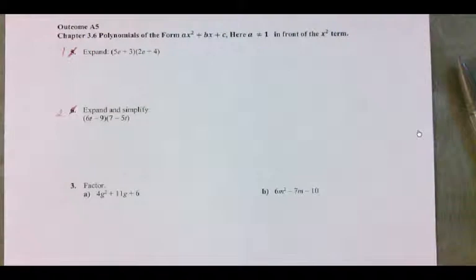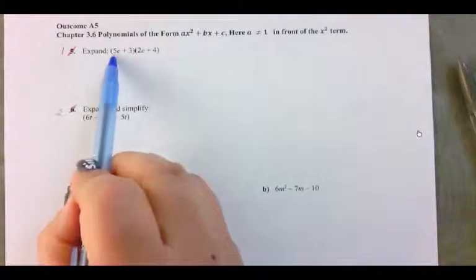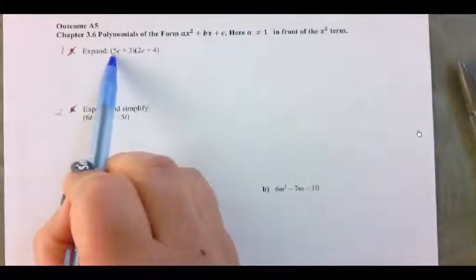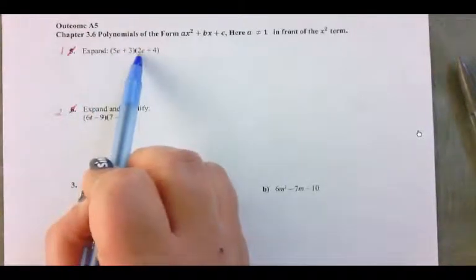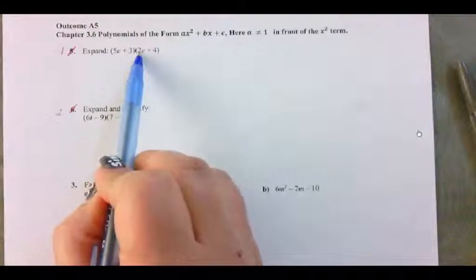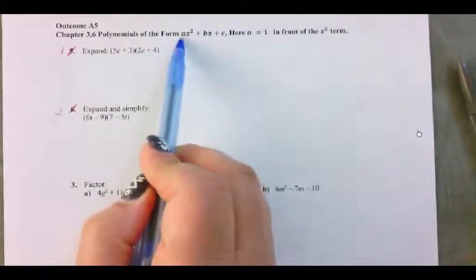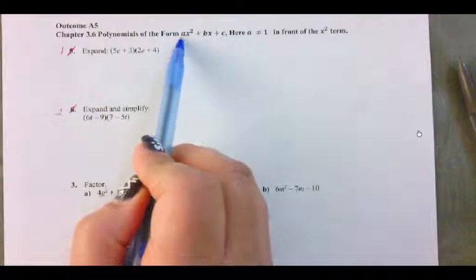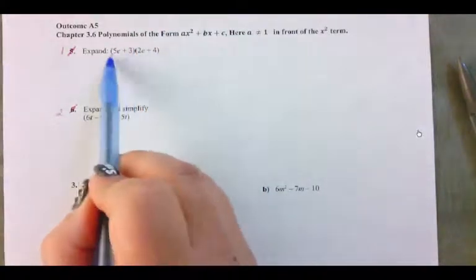Alright, first we're just going to get a little practice expanding. We're going to notice that there are numbers in front of the variables for the first of each of these binomials. What we're going to end up seeing is a trinomial that has a leading number that is not one — something other than one — and this is how it happens.